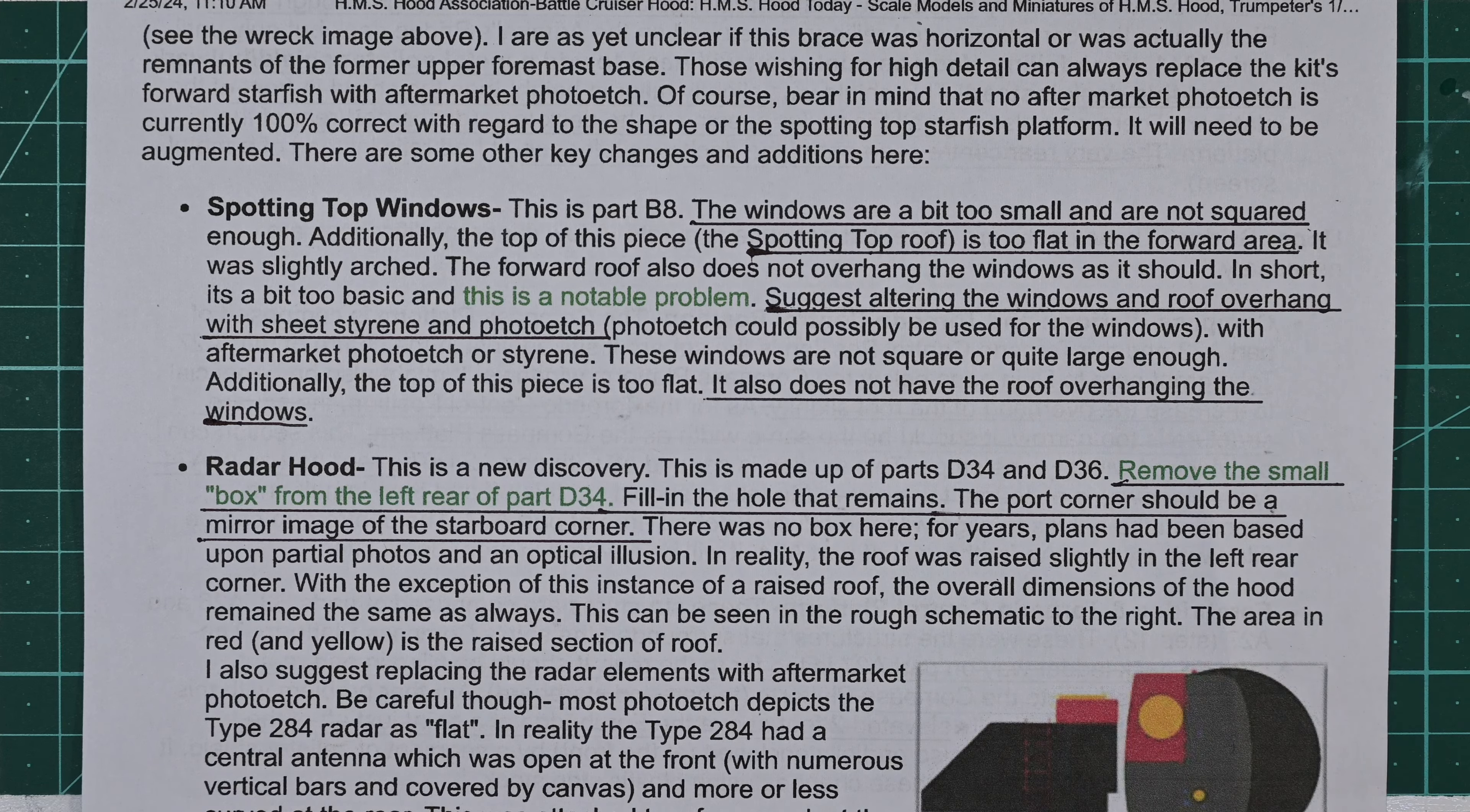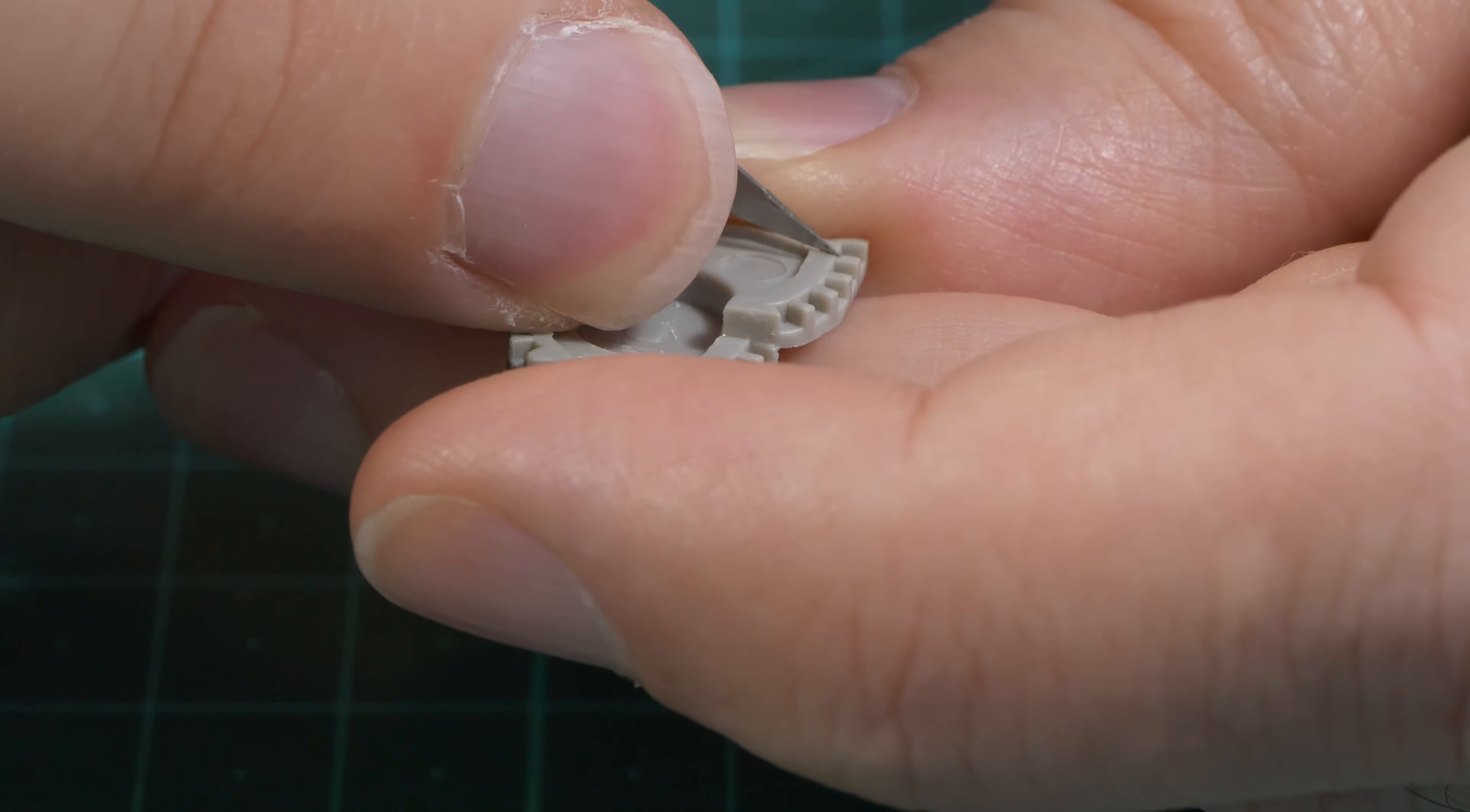Once I have completed the modifications, I'll spray the spotting top in Mr. Surfacer 500. Now to the modifications.